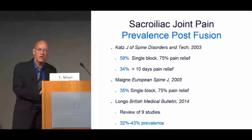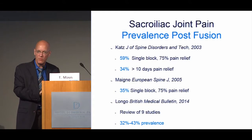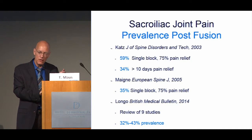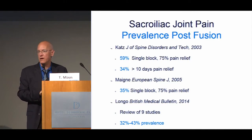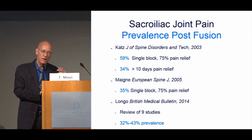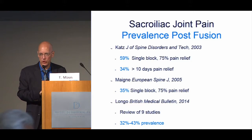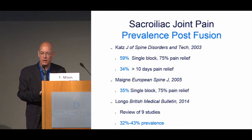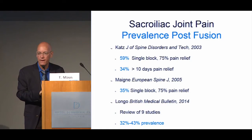Another unique circumstance is the post-lumbar fusion spine. When we fuse portions of the lumbar spine adjacent to the sacroiliac joint, we've essentially made that an adjacent segment. Multiple studies have suggested that in a patient with axial pain post-fusion, there's a much higher likelihood that the sacroiliac joint is the cause of that pain, hovering somewhere between 30 and 40 percent.